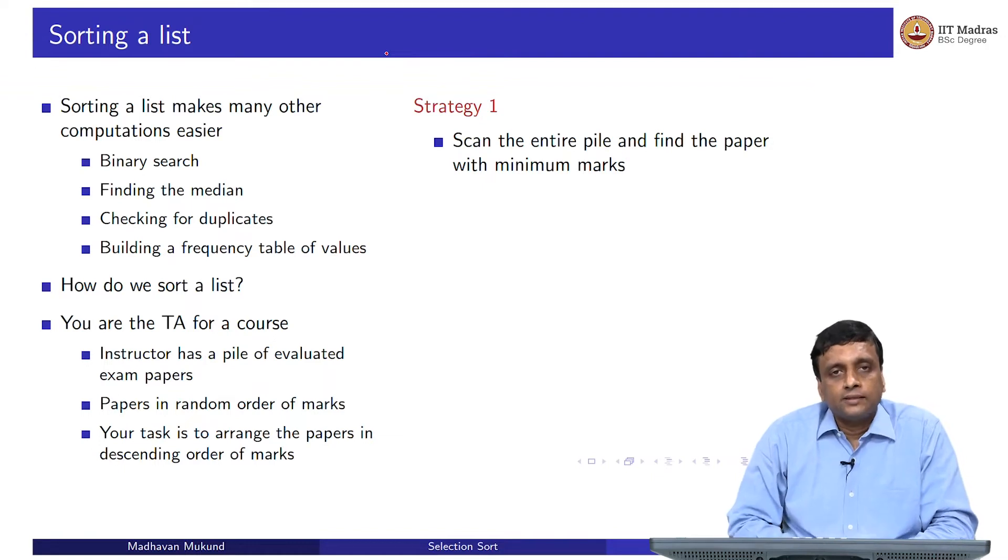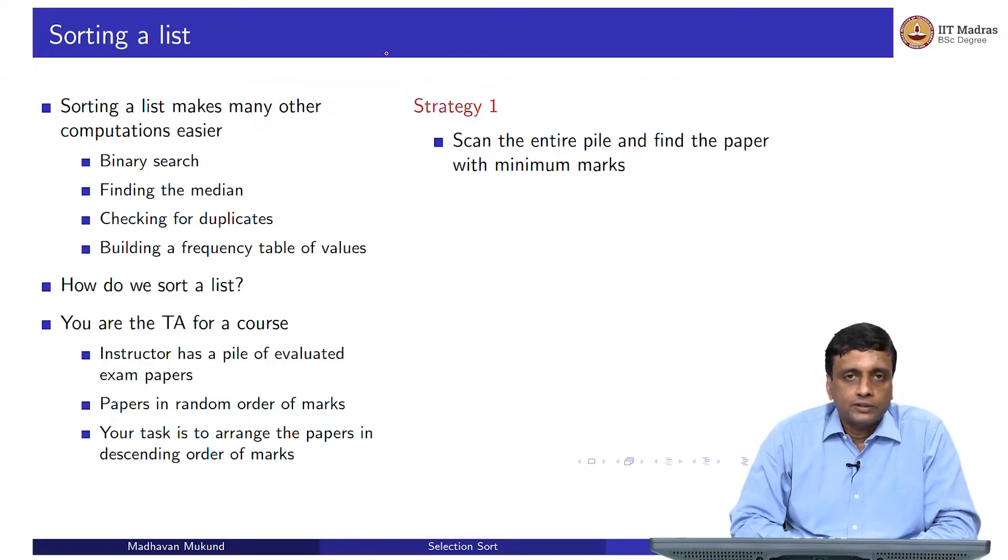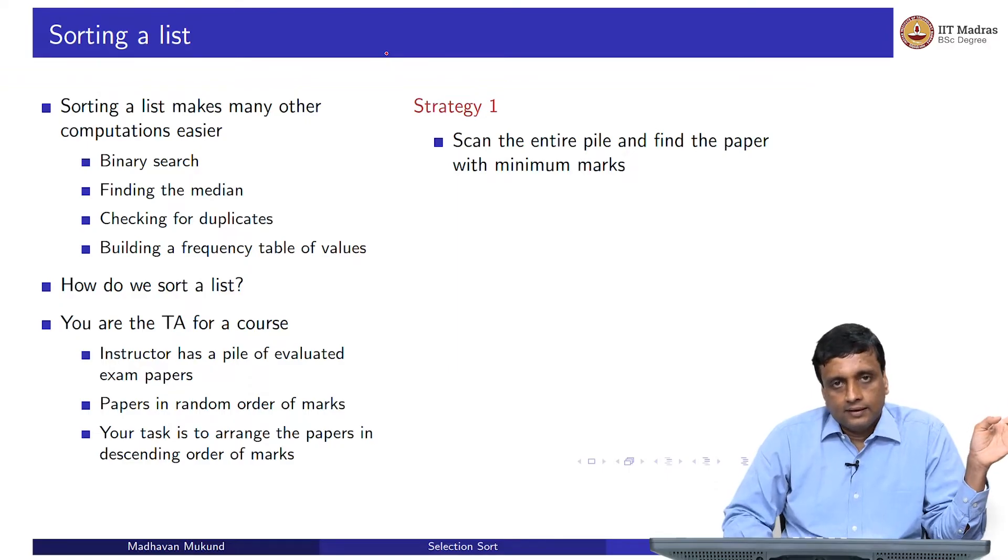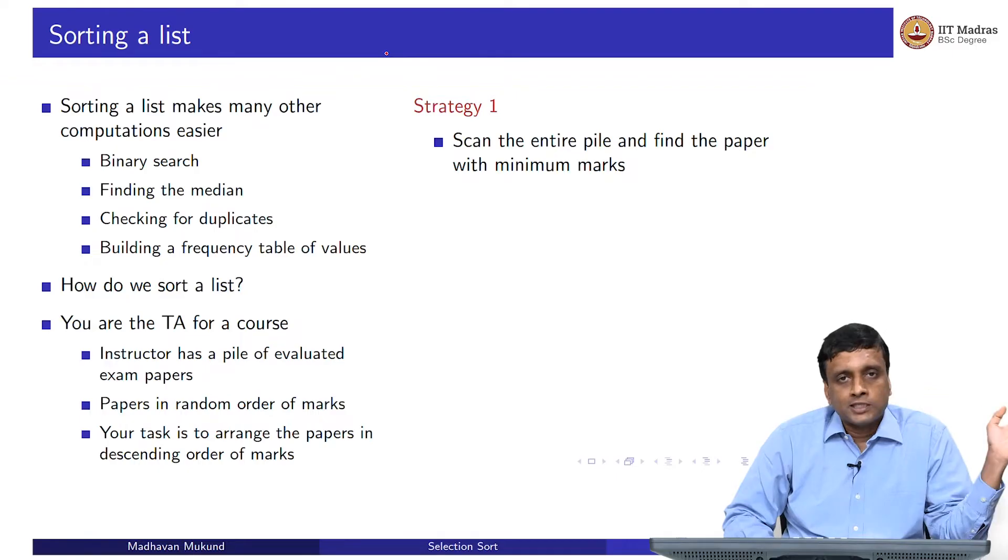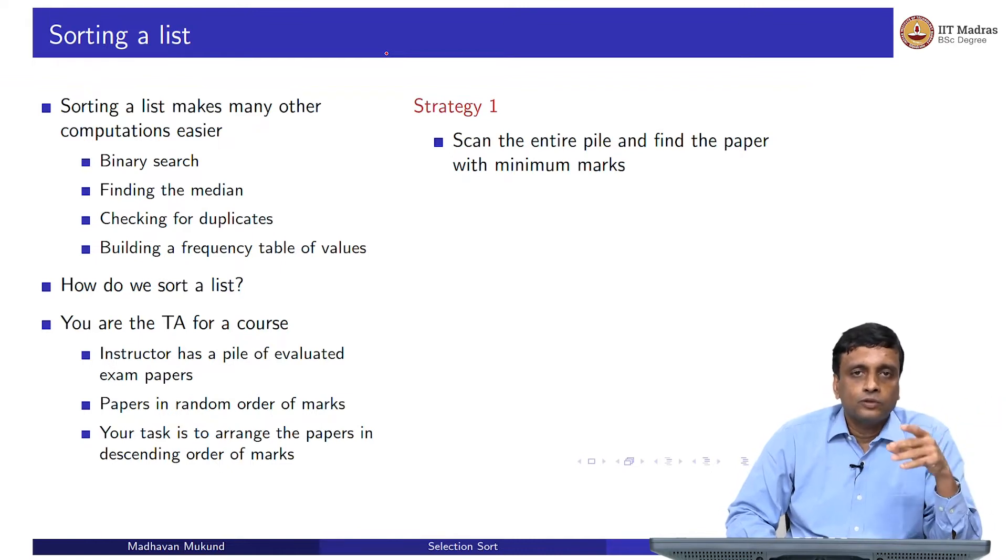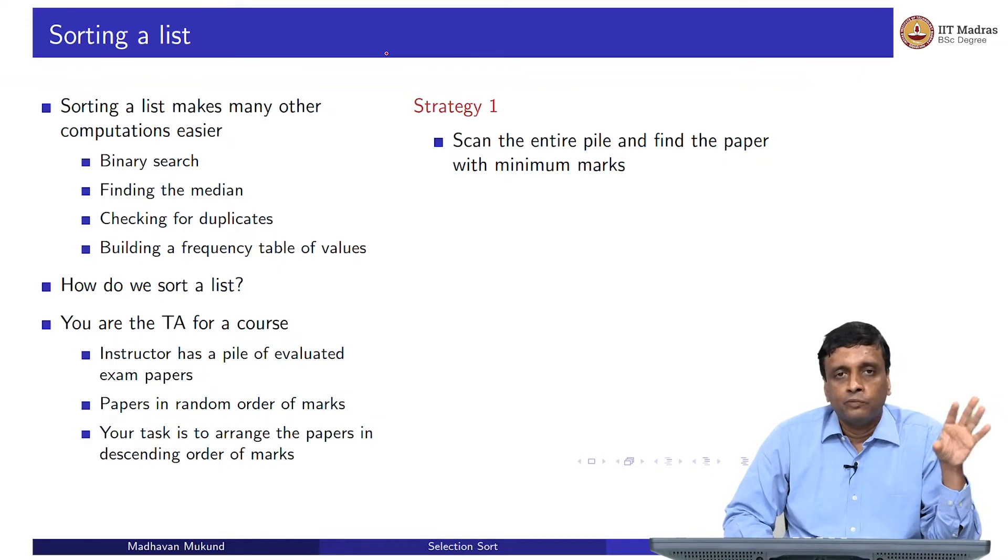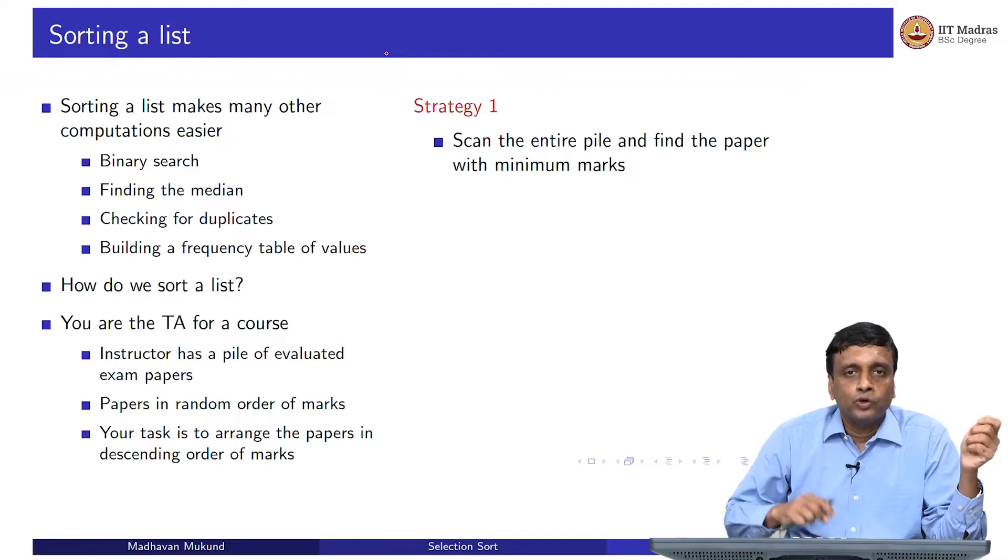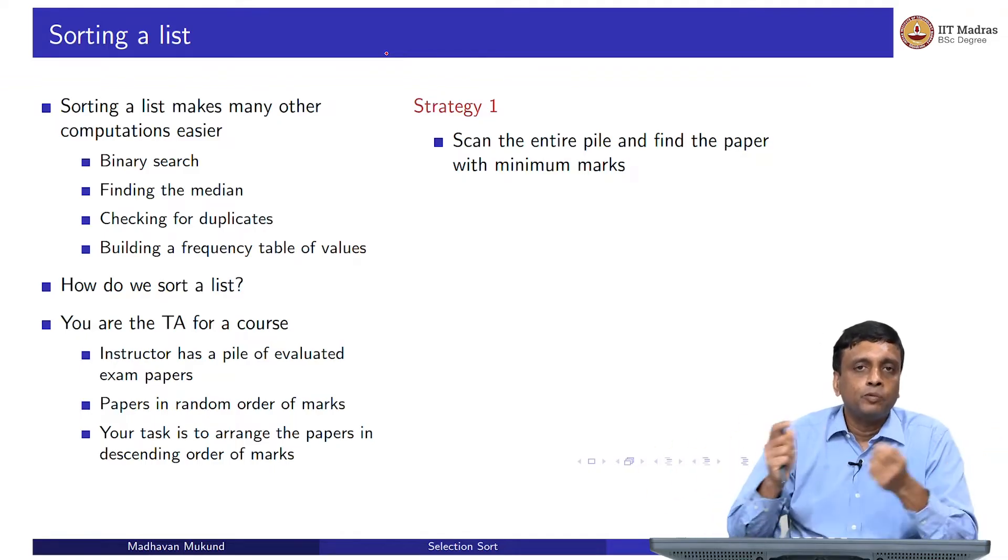Here is one natural strategy which we do use quite often. We will scan the entire list. As we are going along, we all know how to keep track of the maximum and the minimum in a list. You keep the first value as your hypothetical minimum or maximum, every time you see a smaller or larger number, you will update the minimum or the maximum as the case may be. By doing one scan of the list, you can find the maximum value. Let us assume for simplicity that all these values are distinct, there is only one paper with each mark. You find the maximum and then you take it and move it aside depending on which order.